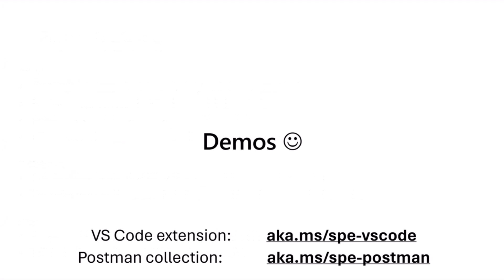Now we're going to get our hands dirty. Some helpful links as we go through: the VS Code extension — which we looked at last week — is at aka.ms/sbe-vscode, or you can search for SharePoint Embedded in the VS Code marketplace. Also, the Postman collection is at aka.ms/sbe-postman if you want to import that.